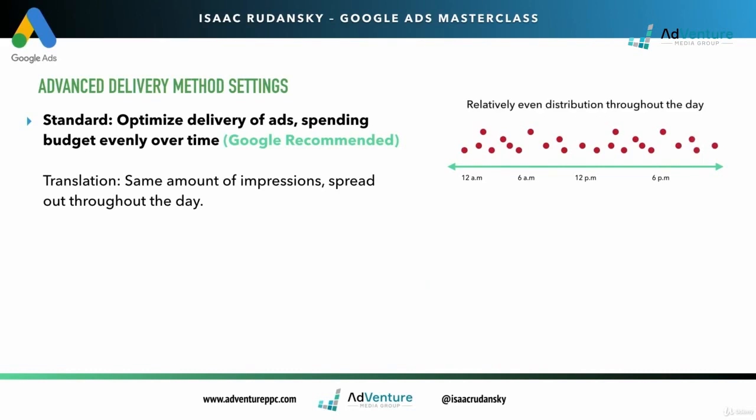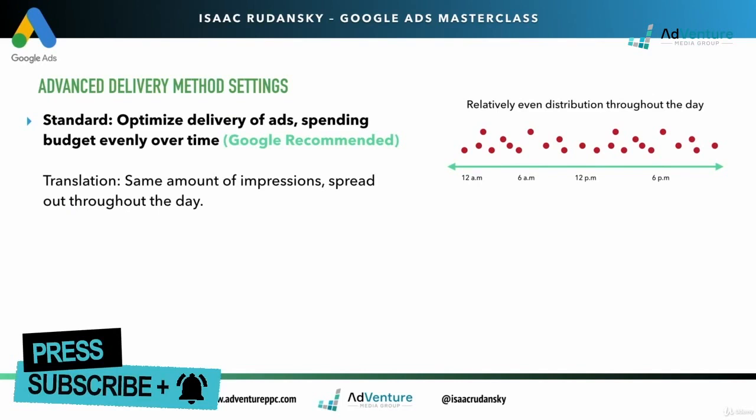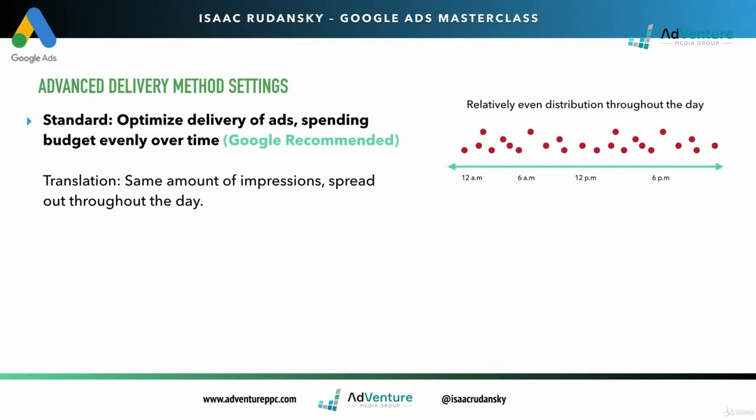My impressions will be a relatively even distribution throughout the day. If Google knows the maximum amount of impressions I can get is 2,000 impressions, they'll stagger those impressions throughout the day. I'll miss out on a bunch of auctions early, and Google has enough computing power to know exactly how to give me that even distribution.